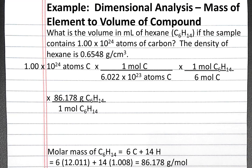So in our dimensional analysis, 1 mole of hexane equals 86.178 grams of hexane. Next we can convert from grams to centimeters cubed using the density given. 0.6548 grams of hexane is 1 centimeter cubed of hexane.